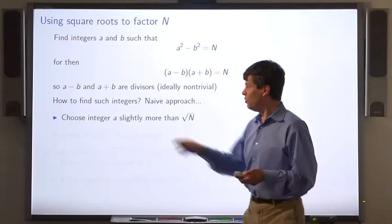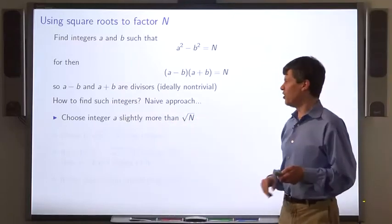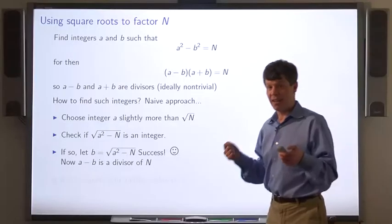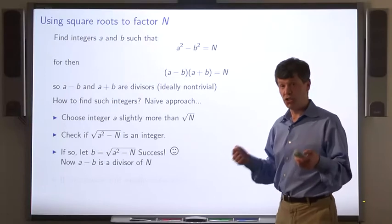We choose some integer a that's slightly more than the square root of n and we check if the square root of a squared minus n is an integer. And if so, we've found b. Now a minus b is the divisor of n and there's at least a good chance that it's a non-trivial divisor.